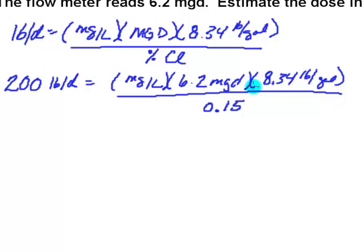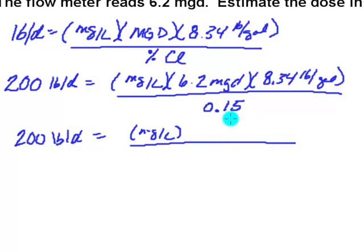So let's just bring down this side, 200 pounds per day. And I'm going to still have my milligrams per liter, but I can multiply those two things on the top. So I'm going to take my 6.2 and multiply it by 8.34, and I find that is equal to 51.708. I'm going to divide that by 0.15.